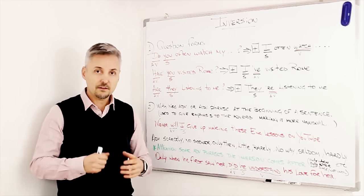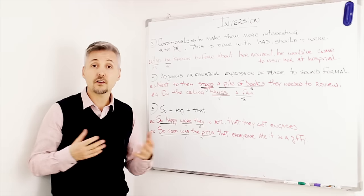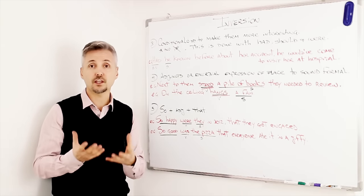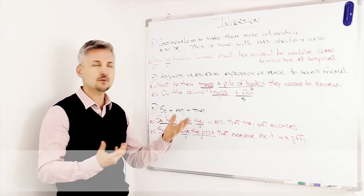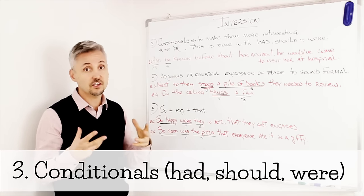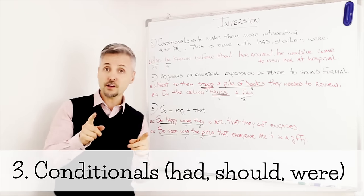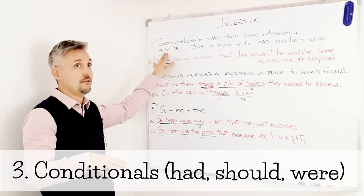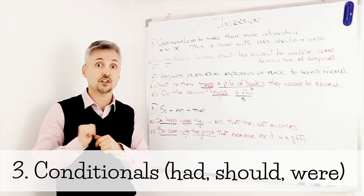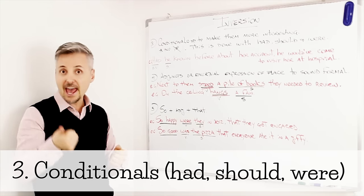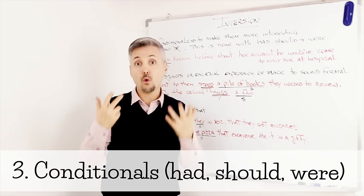Let's look at the other forms now. There are other three situations where we can use inversion. The first one, in conditionals. That's right. In conditional sentences, to make them more interesting. Don't forget, though, that we don't use if at the beginning if we use inversion. So, this is done with had, should, were.